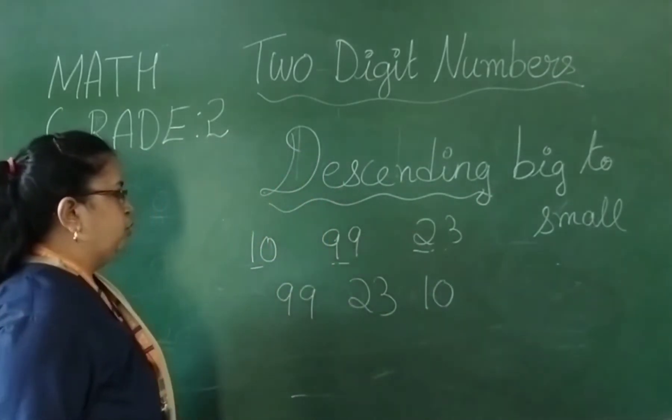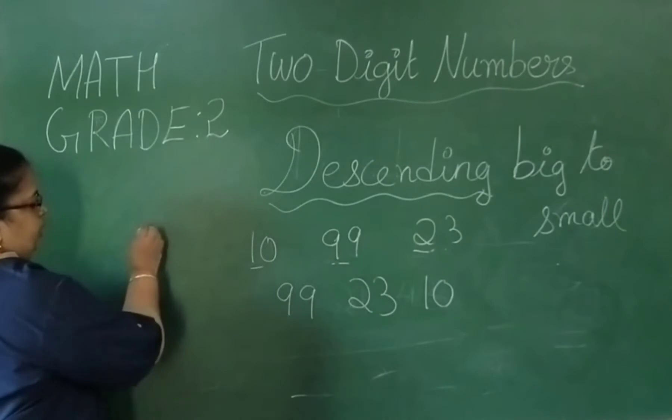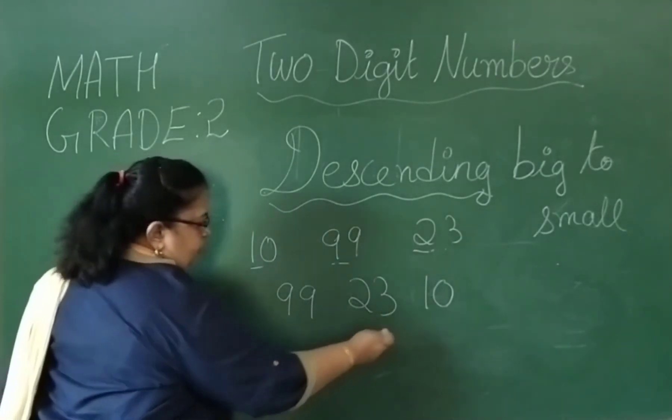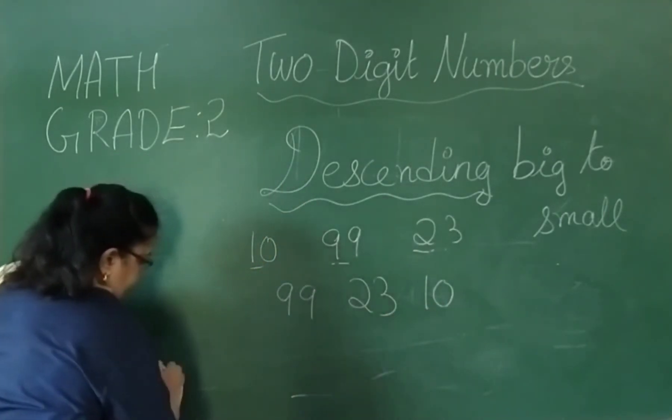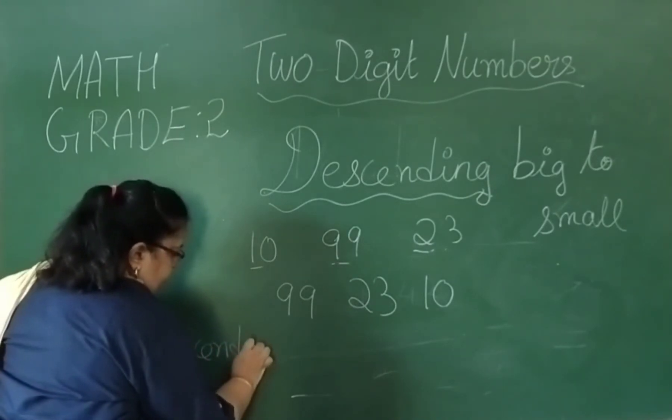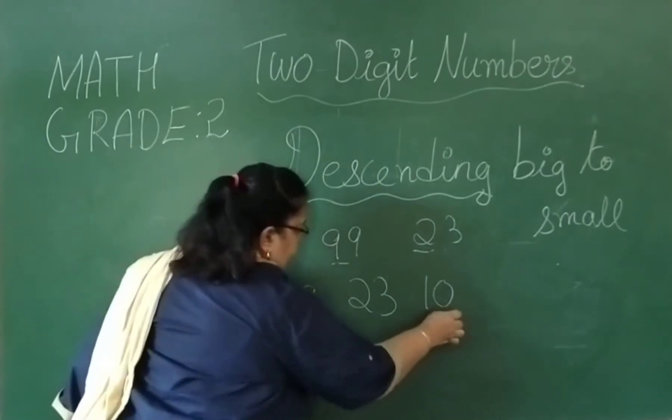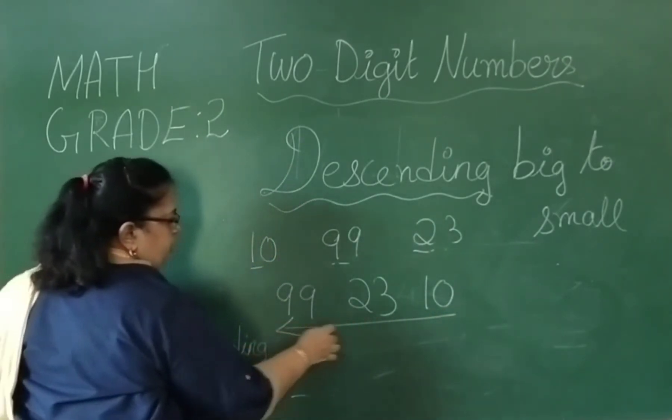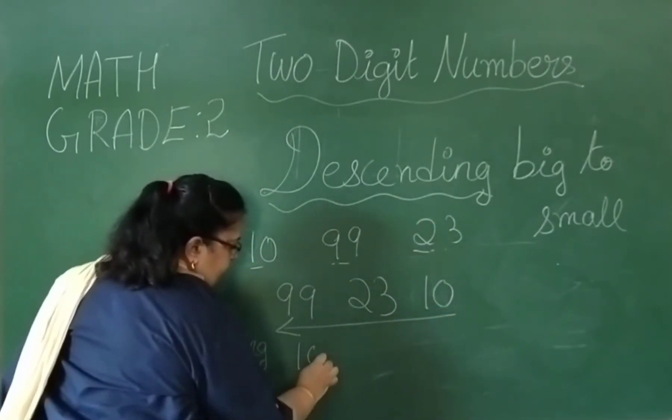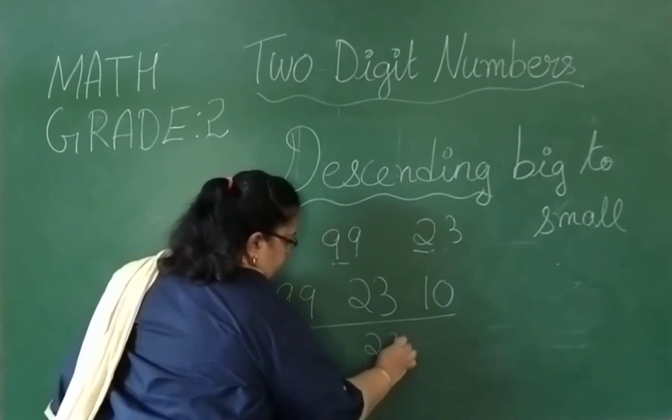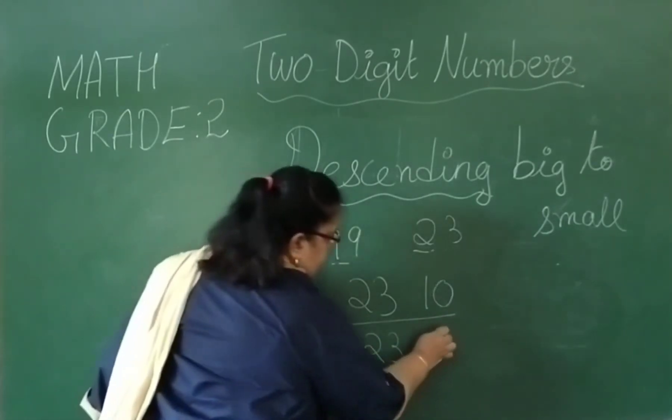When you do in the ascending, if you have to do ascending, you have to start from here. If you are doing in the descending, it is the reverse of ascending. You have to see the first digit: first 10, then 23, then 99.